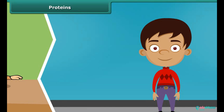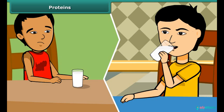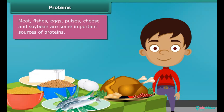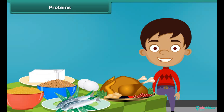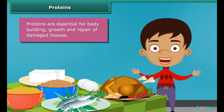Some children who do not drink milk become weak and underdeveloped because milk contains required proteins for our growth. Meat, fishes, eggs, pulses, cheese and soybean are some other important sources of proteins in our diet. The major role of proteins is building and repairing of damaged tissues. Along with carbohydrates, they are also a source of energy.